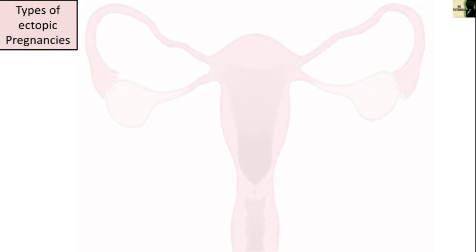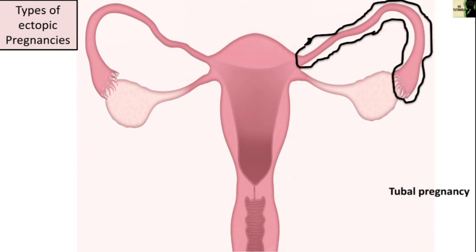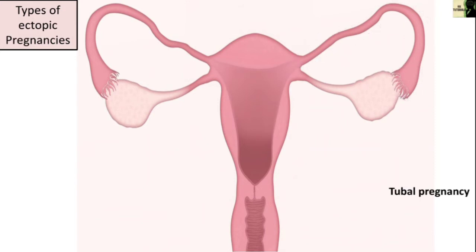Ectopic pregnancy is classified according to where exactly the fertilized egg implants. In normal pregnancy, the embryo implants in the uterine cavity. Ectopic pregnancy can be tubal or non-tubal. A tubal pregnancy occurs when the egg has implanted in the fallopian tube, and tubal pregnancies are named according to the specific structure of the fallopian tube in which the embryo is implanted.